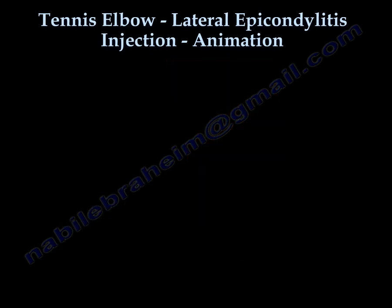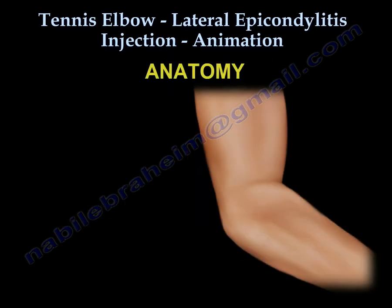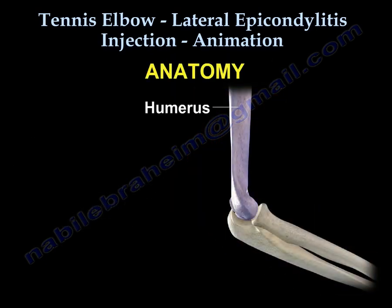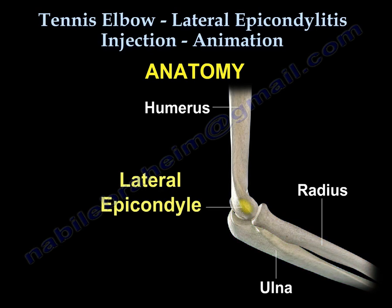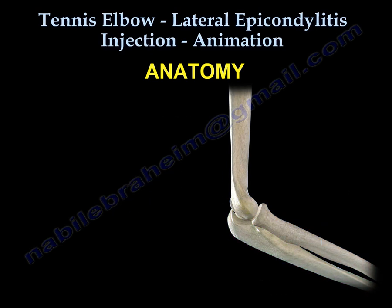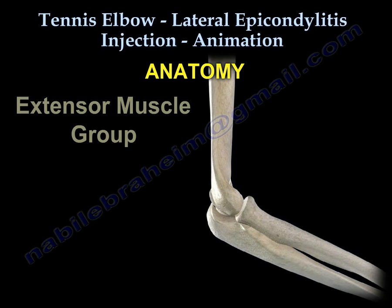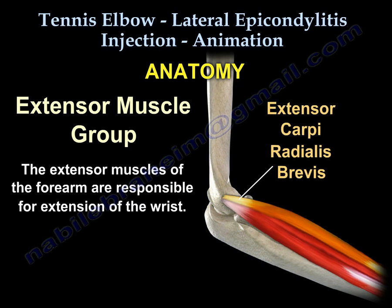This is the anatomy. You can see the location of the lateral epicondyle. The extensor muscle group is responsible for extension of the wrist. The extensor carpi radialis brevis is the one that's involved in tennis elbow or lateral epicondylitis.